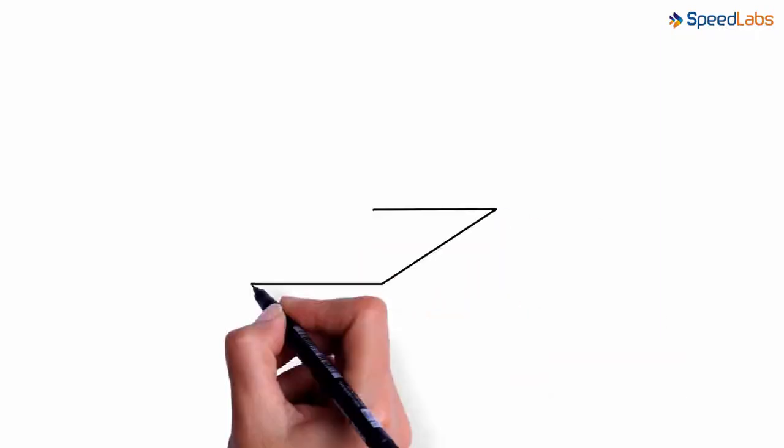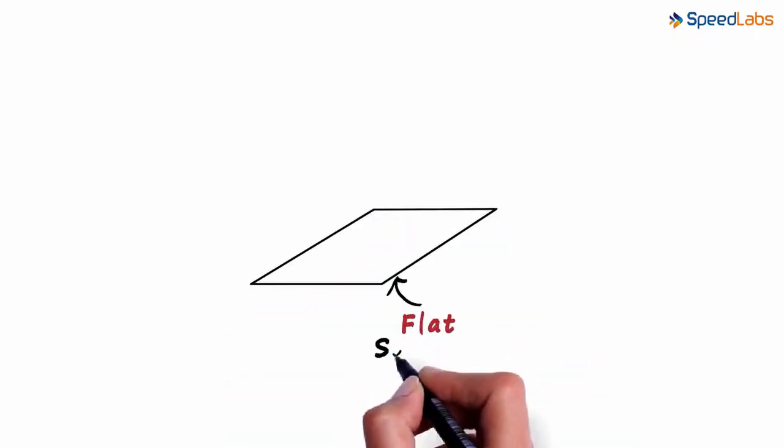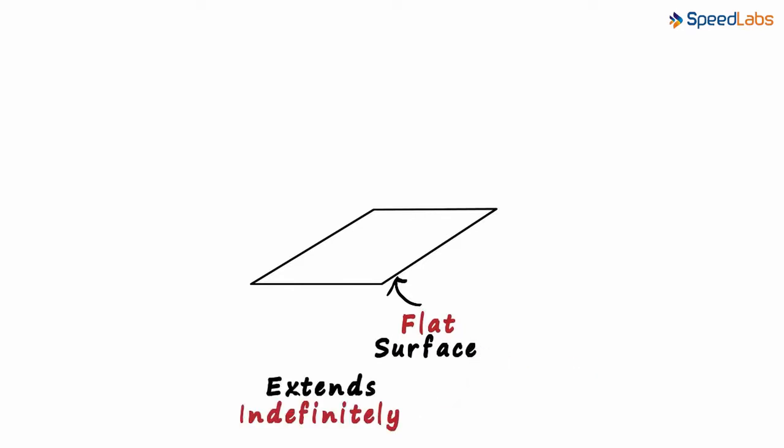Look at what is drawn on the whiteboard. It's a flat surface. A plane basically extends indefinitely in all directions.